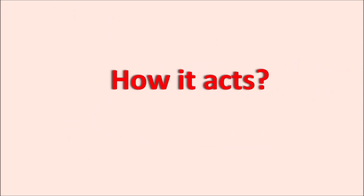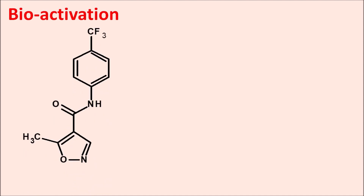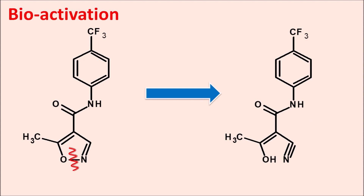Now let us see how this drug acts. One important step in the action of leflunomide is bioactivation. Since leflunomide is a prodrug, it must undergo bioactivation. Within the structure, the heterocyclic ring system is opened at a specific position. Due to this ring opening, an active metabolite is produced — this active metabolite of leflunomide is teriflunomide. Teriflunomide acts as an anti-inflammatory agent as well as an immunosuppressant.